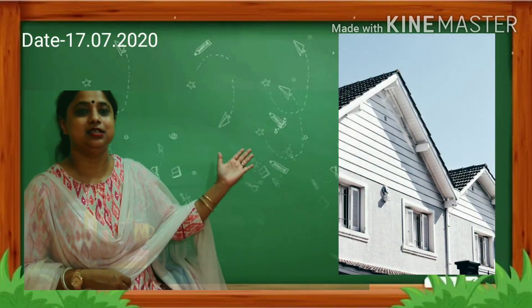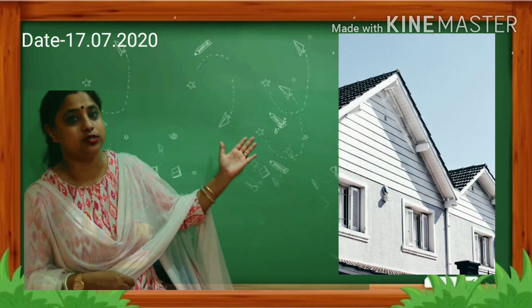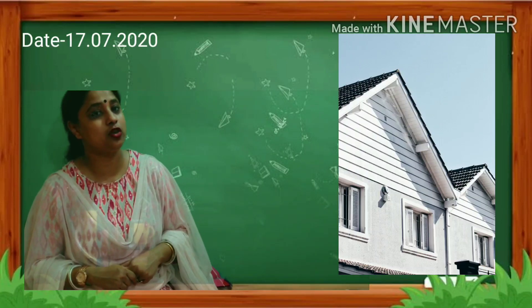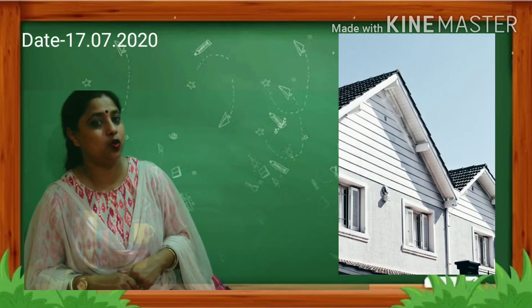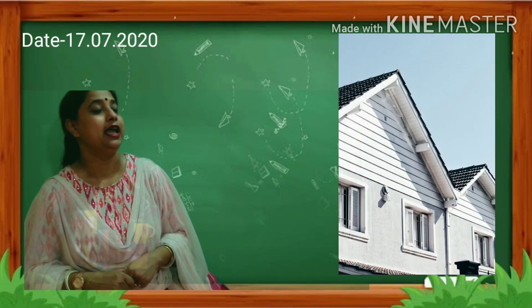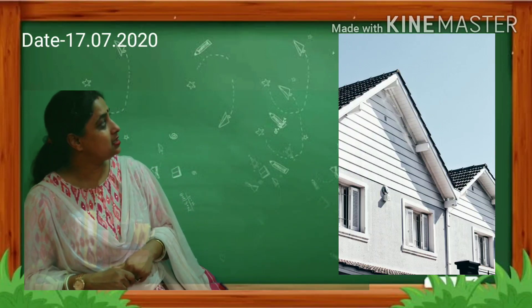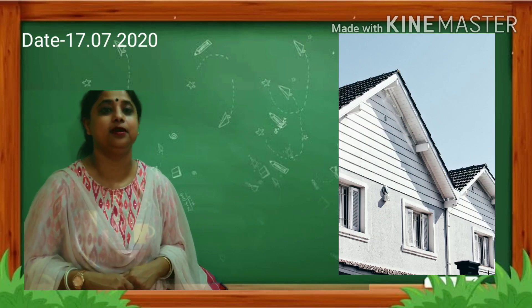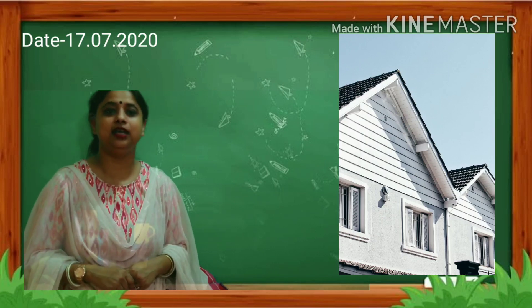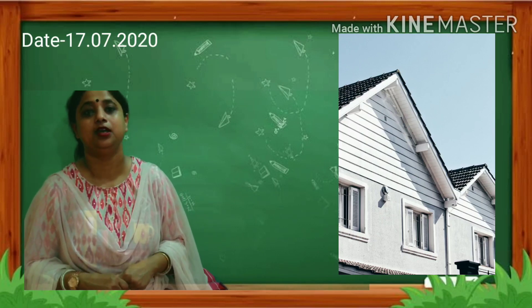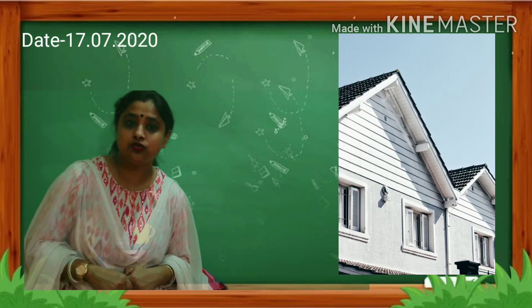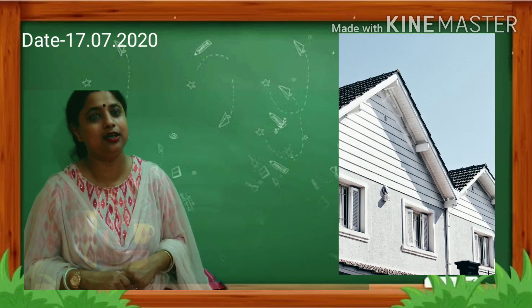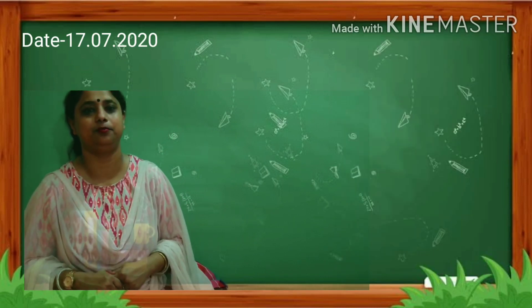What is this? This is a house. What is the shape of the rooftop of the house? It is triangle in shape. So the house rooftop has a triangle shape.